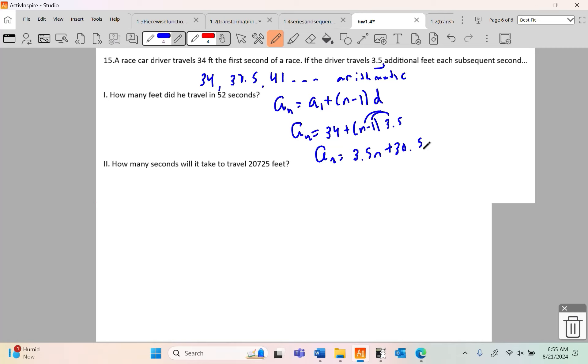Now, why is that important? Because it's saying how many feet did he travel in 52 seconds? That is a summation idea. How many feet in 52 seconds? It's going to be the sum of 52 things. And it's going to be the number of those things, which is 52 over 2 times the first term, which is 34, plus the last term, which happens at 52 seconds. So we're going to have to plug a 52 in. A sub 52 is going to be 3.5 times 52 plus 30.5.